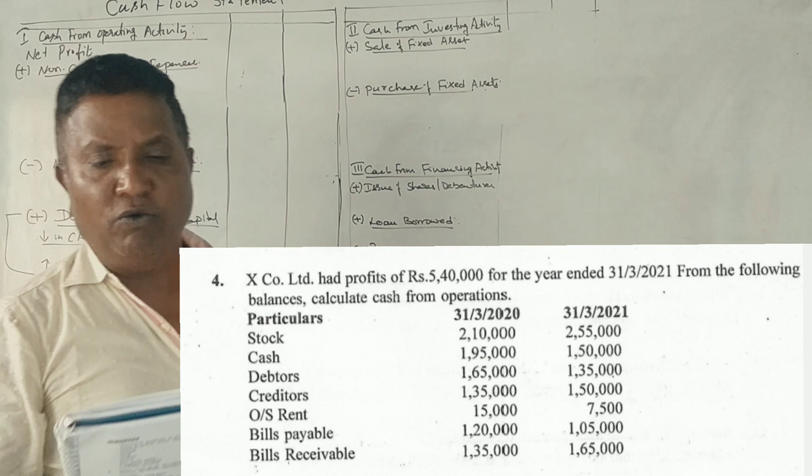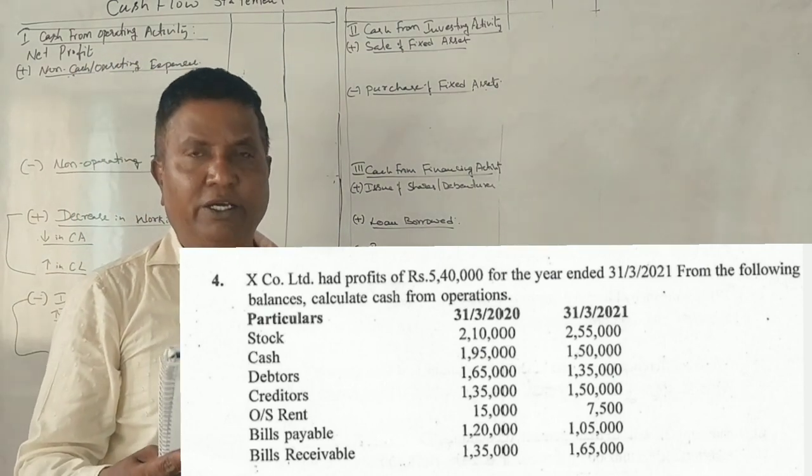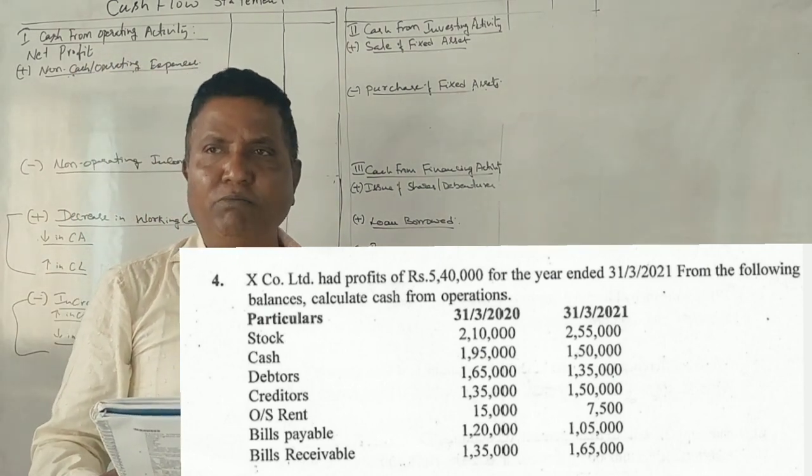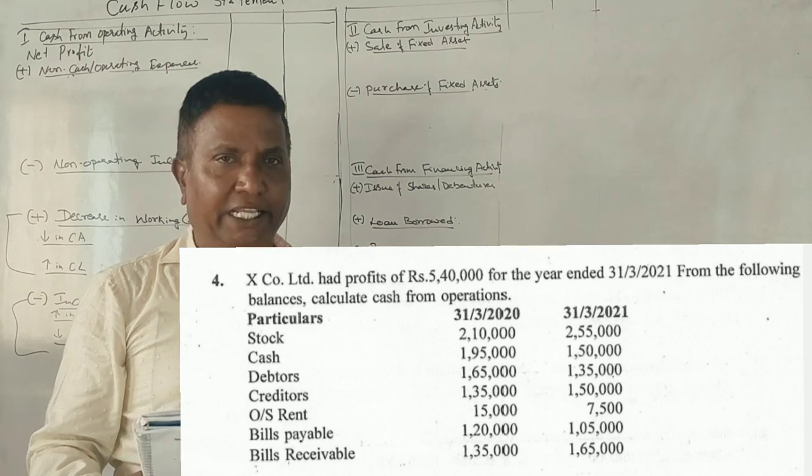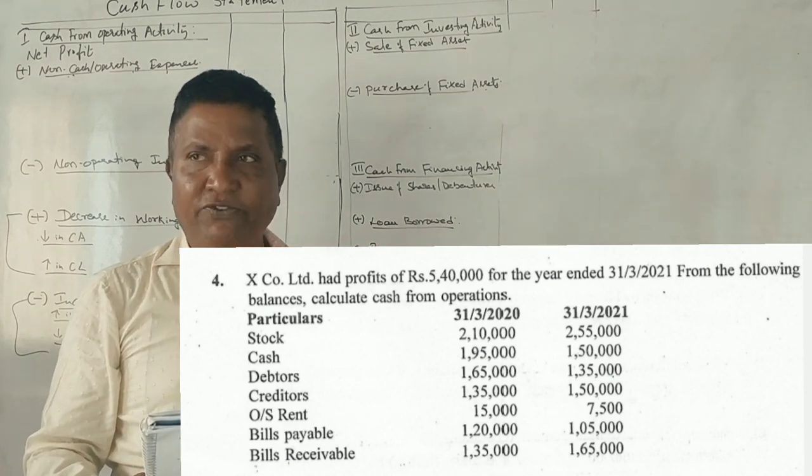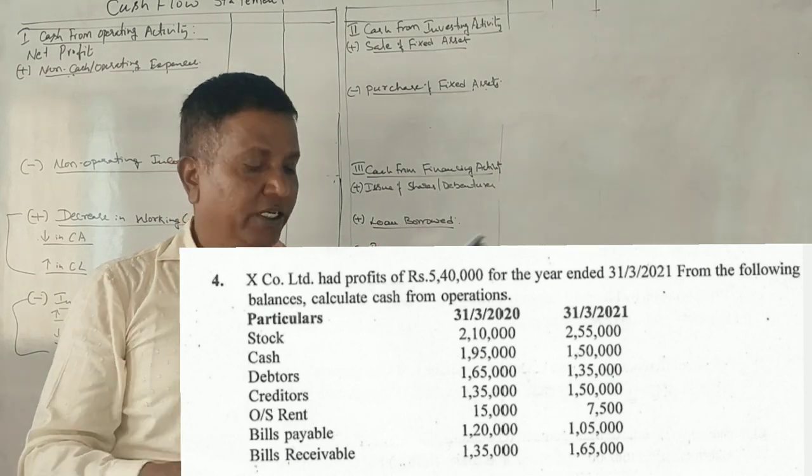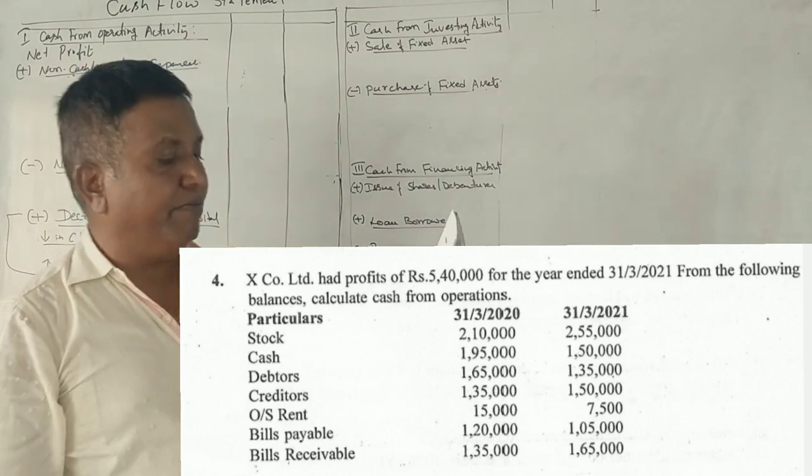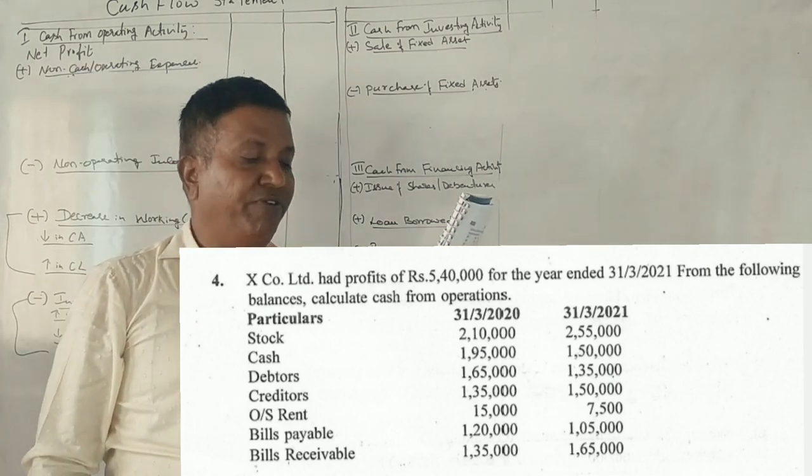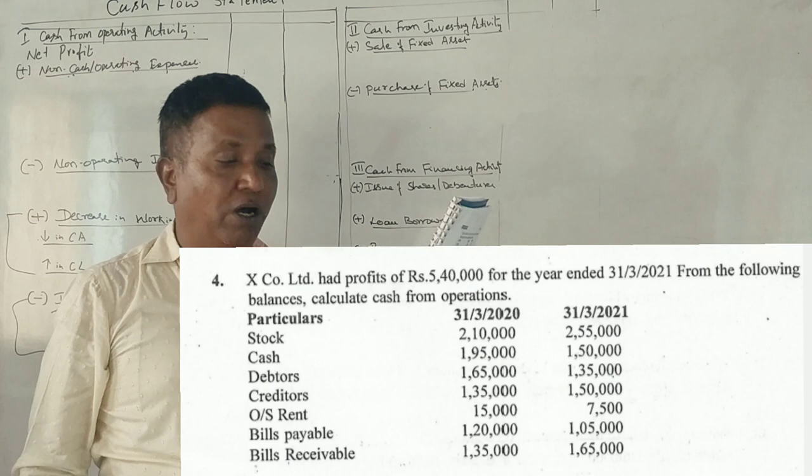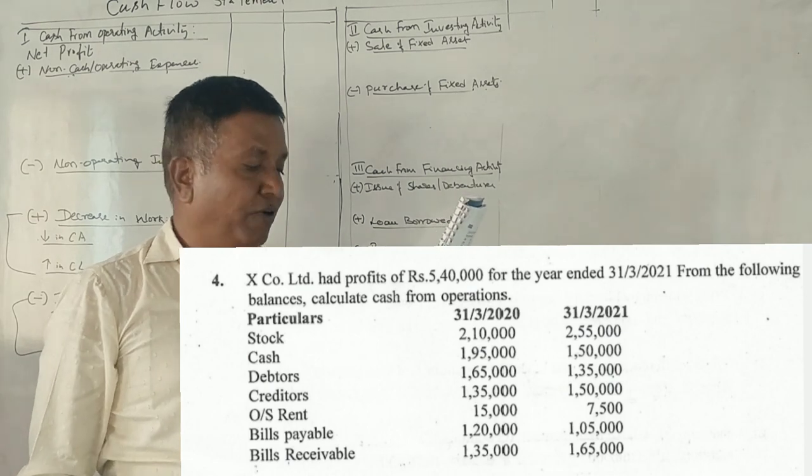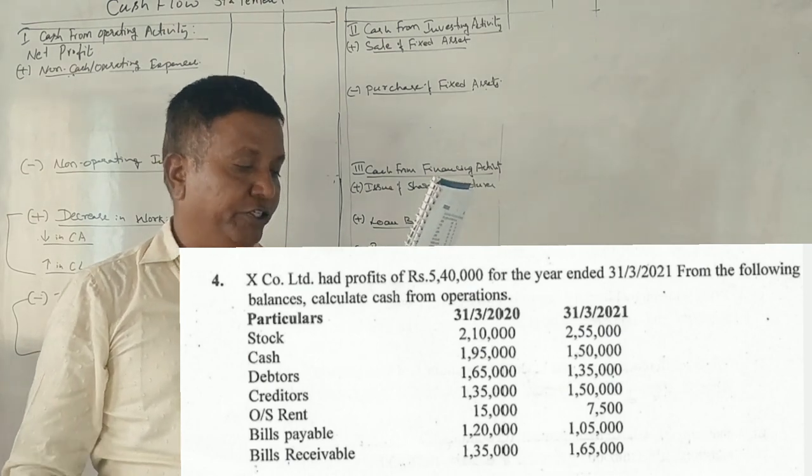In 2020-21, a 5 marks question came on calculating cash from operating activity. X Company Limited had profits of 5,40,000 for the year ended March 31, 2021. From the following balances, calculate cash from operations.